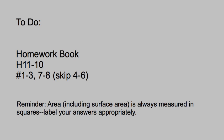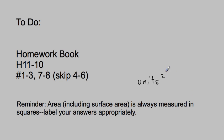Here's our task for today. It's working out of the homework book, H11-10. We're doing problems one, two, and three, skipping four, then five and six, and then seven and eight. Reminder: area — and that includes surface area — is always measured in little squares, so label your answers appropriately. It will be units with a little exponent of two at the end. That two is important — it means the units are square units. Good luck.